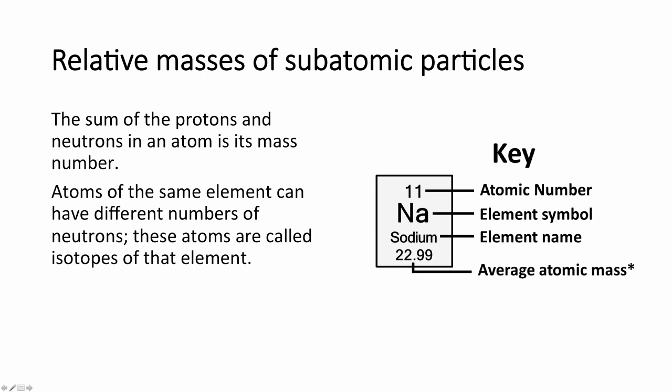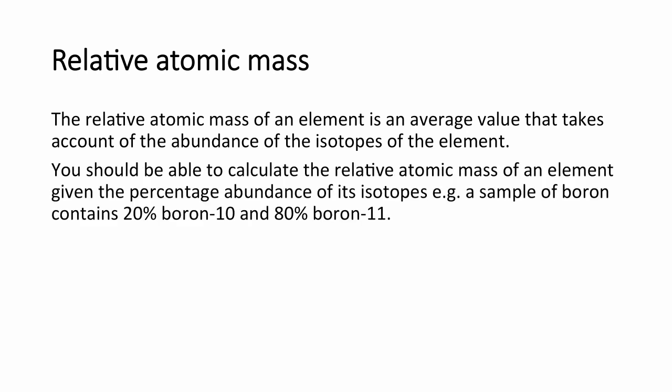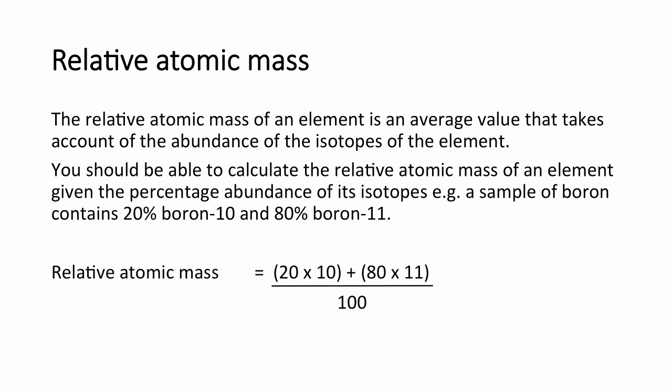These are called isotopes. The relative atomic mass of an element is an average that takes into account all the abundances — that is, how much of each isotope there is. You need to be able to calculate the relative atomic mass given percentages. For example, if a sample of boron contains 20% boron-10 and 80% boron-11, the relative atomic mass is calculated as (20×10 + 80×11) ÷ 100, giving a relative atomic mass of 10.8.